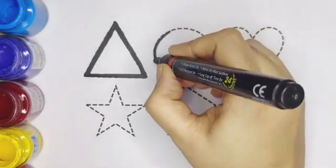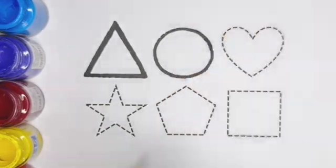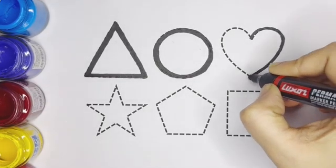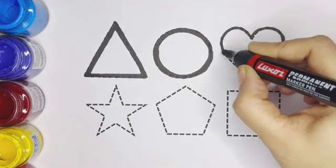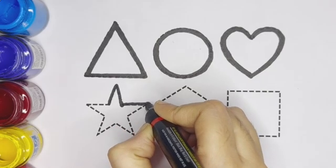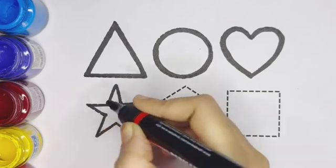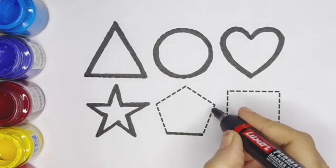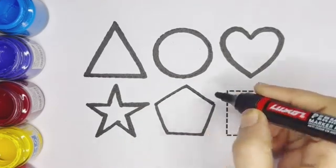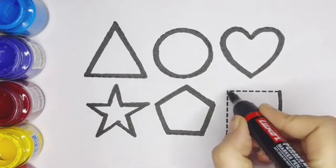Circle kids, this is circle. Heart kids, this is heart. Star, this shape is called star. This is pentagon kids, pentagon. Square, this is square.